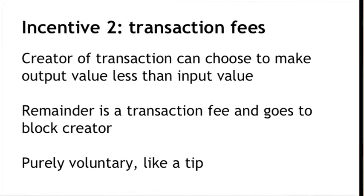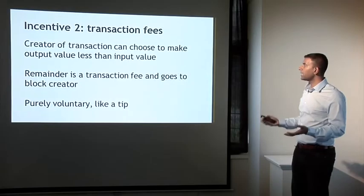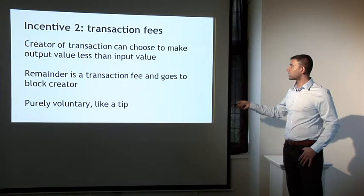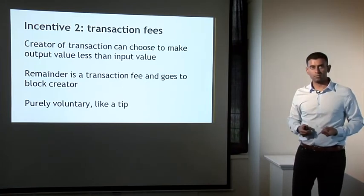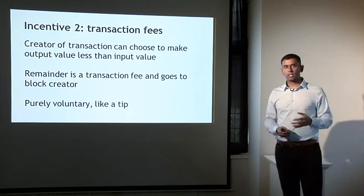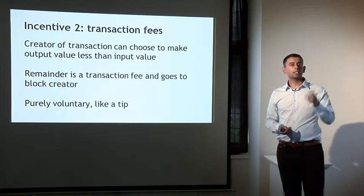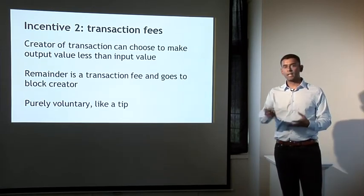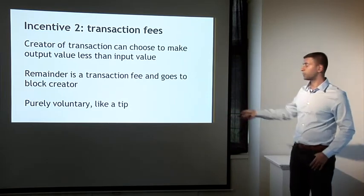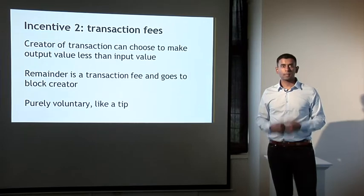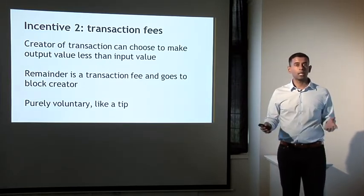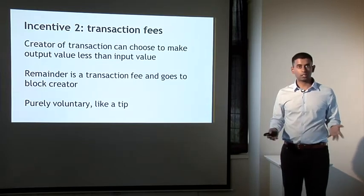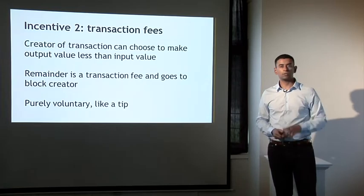The creator of a transaction — not the creator of a block, but the creator of a transaction, like when Alice is paying Bob — can choose to make the output value of that coin less than the input value. The way all the nodes interpret this difference according to the rules of Bitcoin is that it's a transaction fee. Whoever creates the block that first puts that transaction into the blockchain gets to collect that transaction fee. So if you're a node creating a block containing, say, 200 transactions, the sum of all those 200 transaction fees accrues to you. This transaction fee is purely voluntary like a tip, but we expect that as the block reward starts to run out, it'll become more and more important — almost mandatory — for nodes to include a transaction fee in order to get a reasonable quality of service.